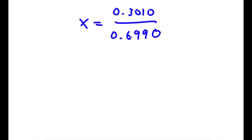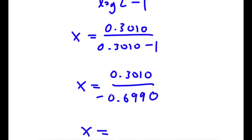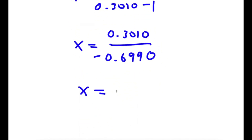And now this is equal to 0.3010 over negative 0.6990. And finally, if I divide these two, I get x is equal to negative 0.43.